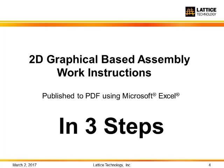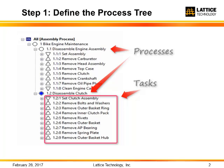Now for our featured topic: creating 2D graphical based work instructions delivered with PDF in three easy steps. Step one, define the process. This is a bike engine maintenance example with two processes — disassembly of the engine and disassembly of the clutch. Processes are noted with circles and are comprised of tasks, which are noted with triangles.